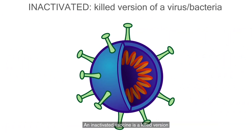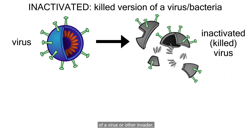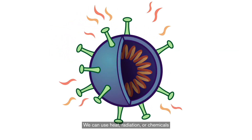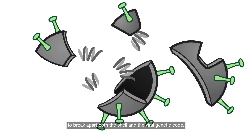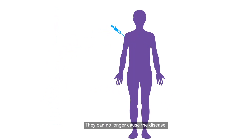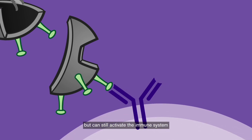An inactivated vaccine is a killed version of a virus or other invader. How do we kill a virus? We can use heat, radiation, or chemicals to break apart both the shell and the viral genetic code. The pieces that remain are inactive — they can no longer cause a disease, but can still activate the immune system to create an immune response.